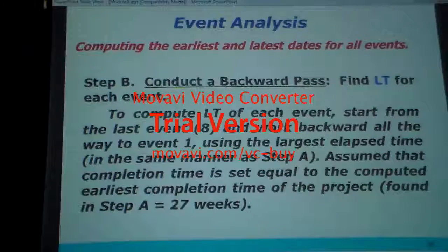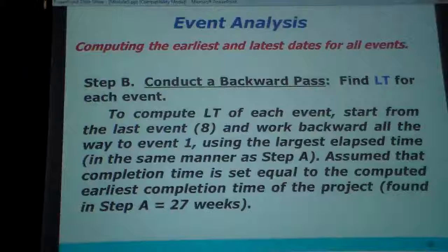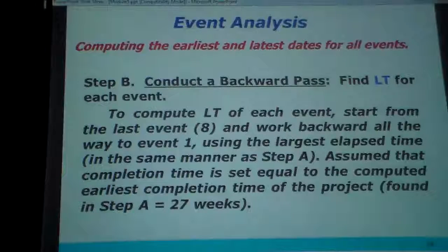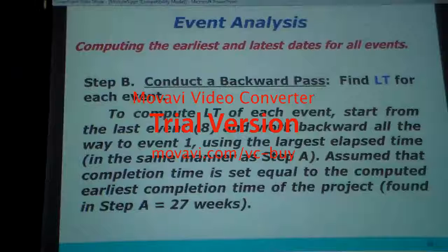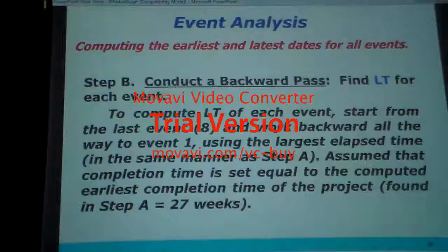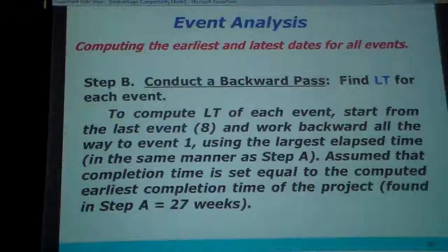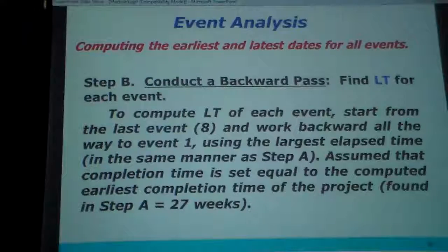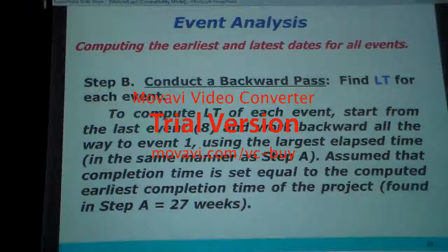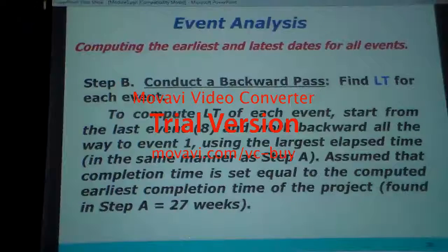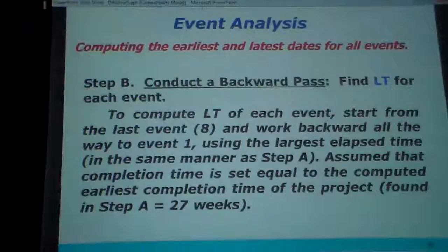Step B — conduct a backward pass. Then every time we have to go from this side to this side. Backward pass — we have to work to calculate late time. As I told you, we'll solve two examples and calculate this. To compute late time of each event, start from the last event — number 8 — and go forward all the way to event one, one by one until it becomes number one.